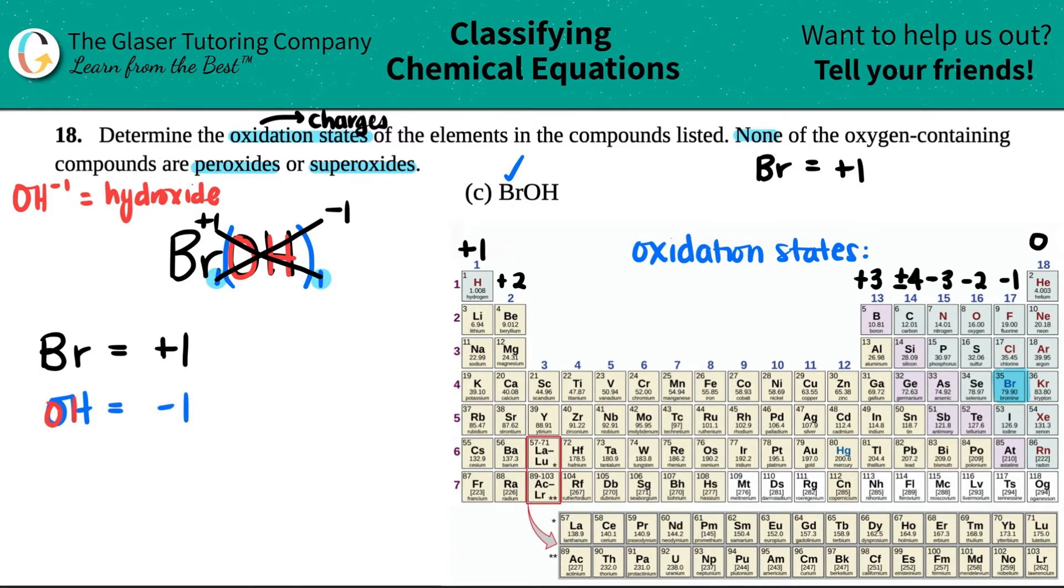Now we just got to figure out what the oxygen and the hydrogen is. They gave us a little tip. They said none of the oxygen containing compounds are peroxides or superoxides. So that means that oxygen will have its trend charge - it will have a negative two charge. By that information, we know that the oxygen has to be a negative two charge. So I found two pieces of the puzzle. And just know that bromine being a plus one means that it lost one electron, and oxygen being a negative two means that it gained two electrons.